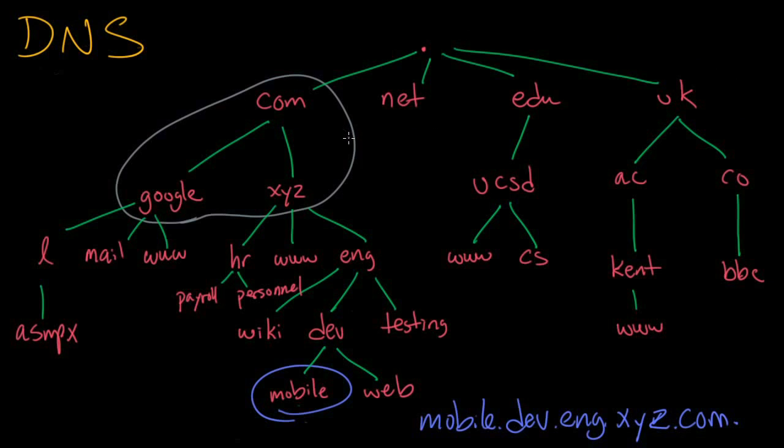The name servers for the com domain look at the query and see that it's going to be going to the xyz.com domain. So it hands off the query to the next zone down.